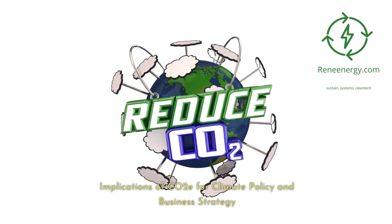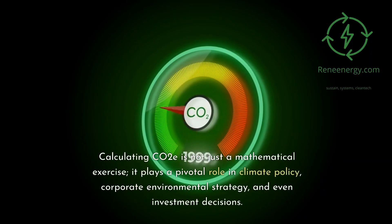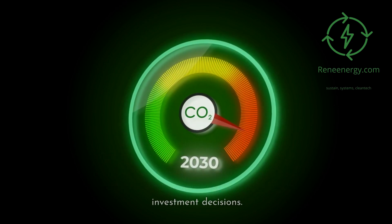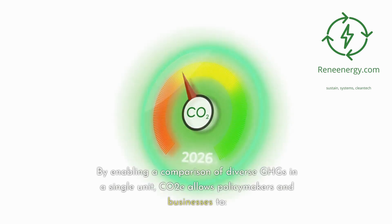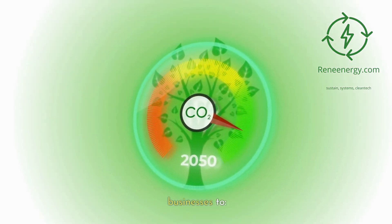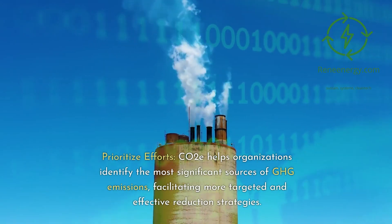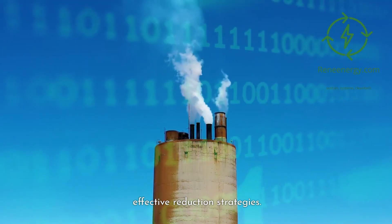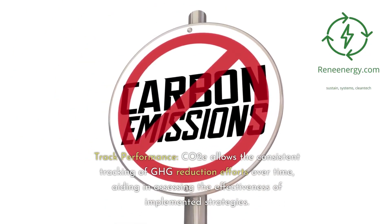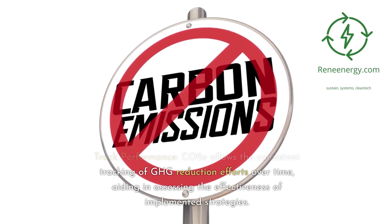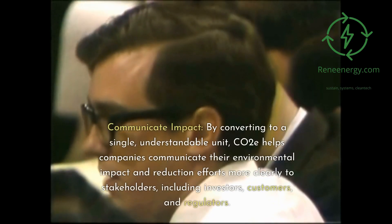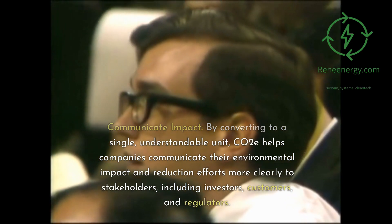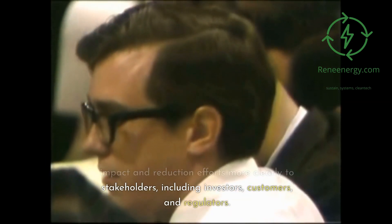Implications of CO2e for climate policy and business strategy: Calculating CO2e is not just a mathematical exercise — it plays a pivotal role in climate policy, corporate environmental strategy, and investment decisions. By enabling a comparison of diverse GHGs in a single unit, CO2e allows policymakers and businesses to prioritize efforts, identify the most significant sources of GHG emissions, and facilitate more targeted and effective reduction strategies. CO2e also allows the consistent tracking of GHG reduction efforts over time, and helps companies communicate their environmental impact and reduction efforts more clearly to stakeholders, including investors, customers, and regulators.